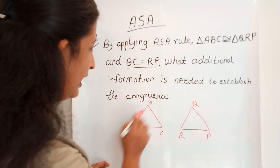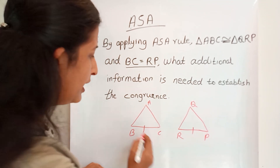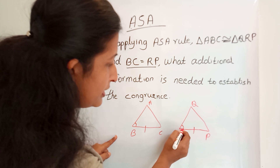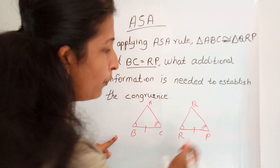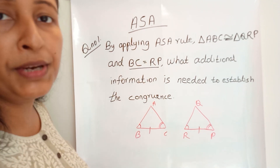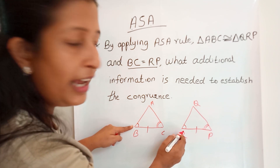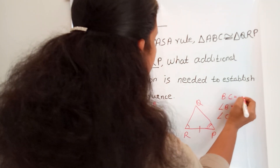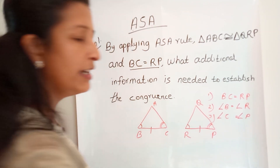By ASA criteria, we have only been given one side, BC equal to RP. We need to find the equal corresponding angles. This side and this side are equal, so we need angle B equal to angle R, and angle C equal to angle P. So the additional information we should add is: angle B equal to angle R, and angle C equal to angle P.